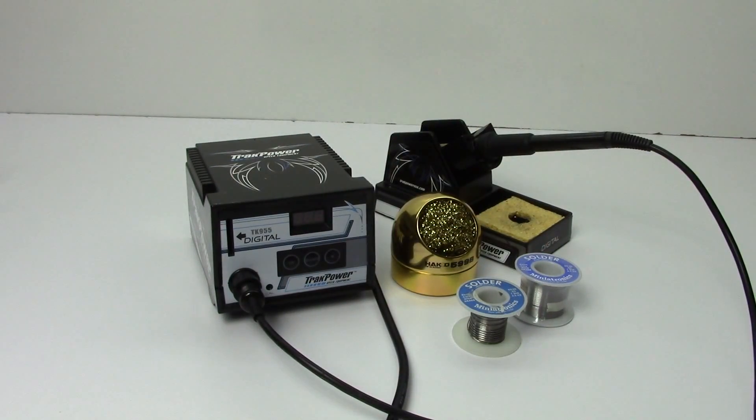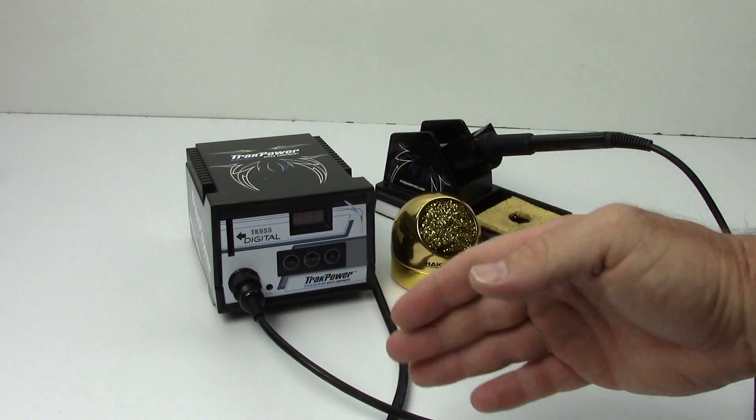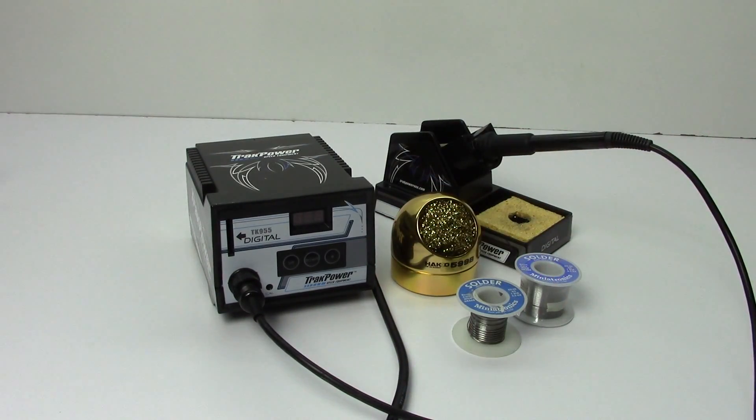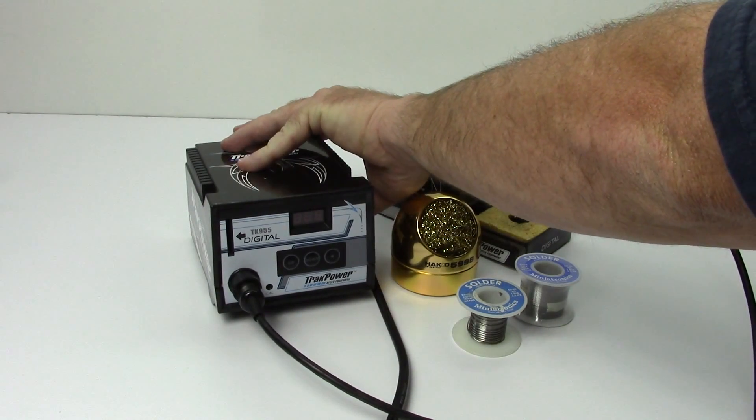Now what I want to do is fire up this TK955 and show you how fast it gets up to speed. I have my iPhone sitting over here on the stopwatch setting so we're going to go ahead and power it on. You guys will see this thing fire up to a particular temperature and I have it set right now for 750 which is typically what I solder at. So got it plugged in, I'm going to turn this thing on and hit the stopwatch at the same time.